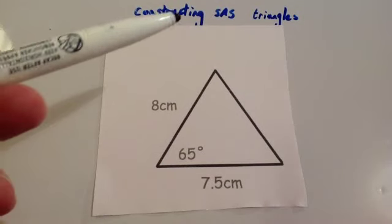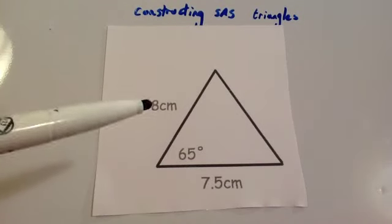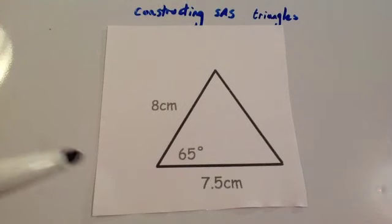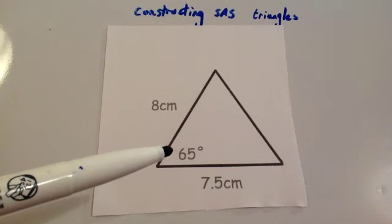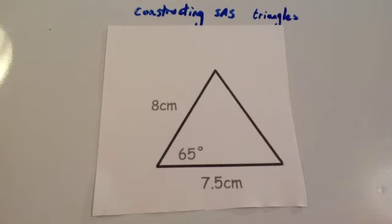In this video we're going to look at constructing SAS triangles, so side angle side triangles. We're going to draw this one as an example. So it's got 8cm, a 65 degree angle, and then a 7.5cm line.